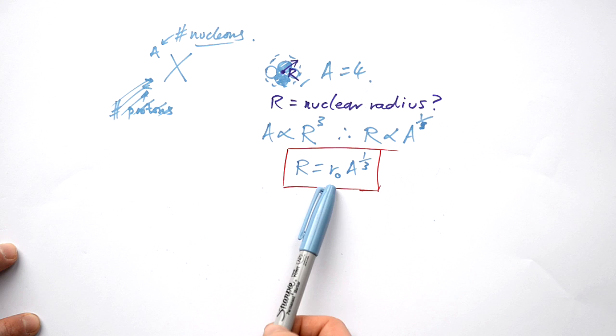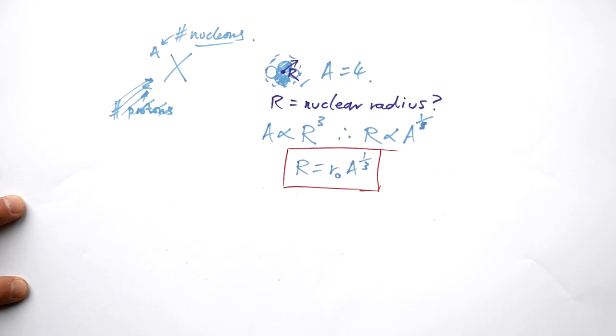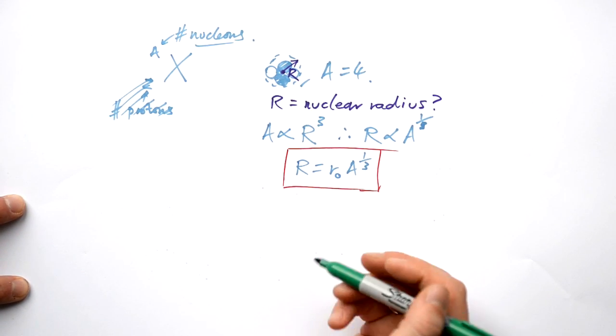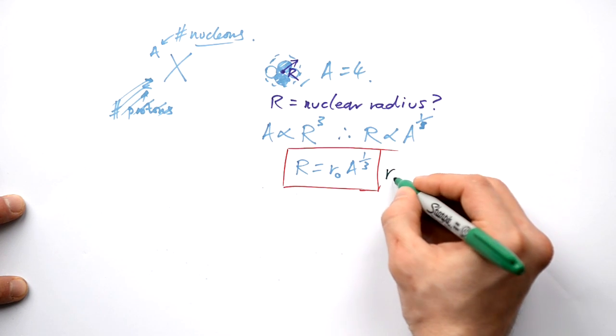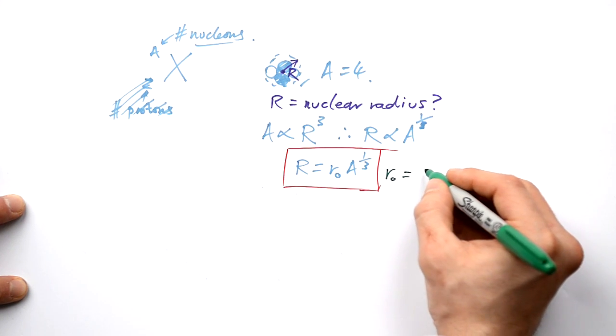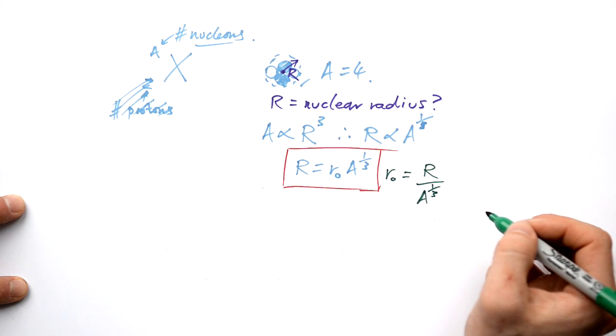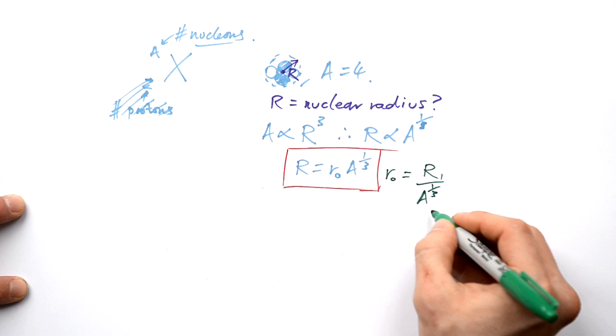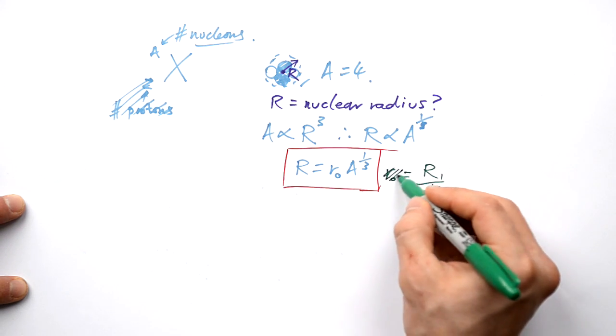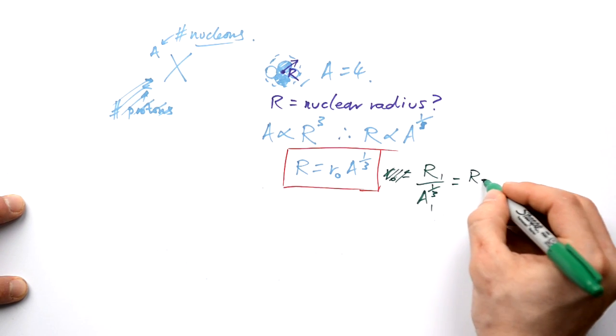What we really care about is comparing different nuclei. So if we rearrange this to make the constant the subject, then we end up with r₀ equals the radius of the nucleus divided by the number of nucleons or the mass to the cube root. So we know that whatever values we have, that is always going to be true.